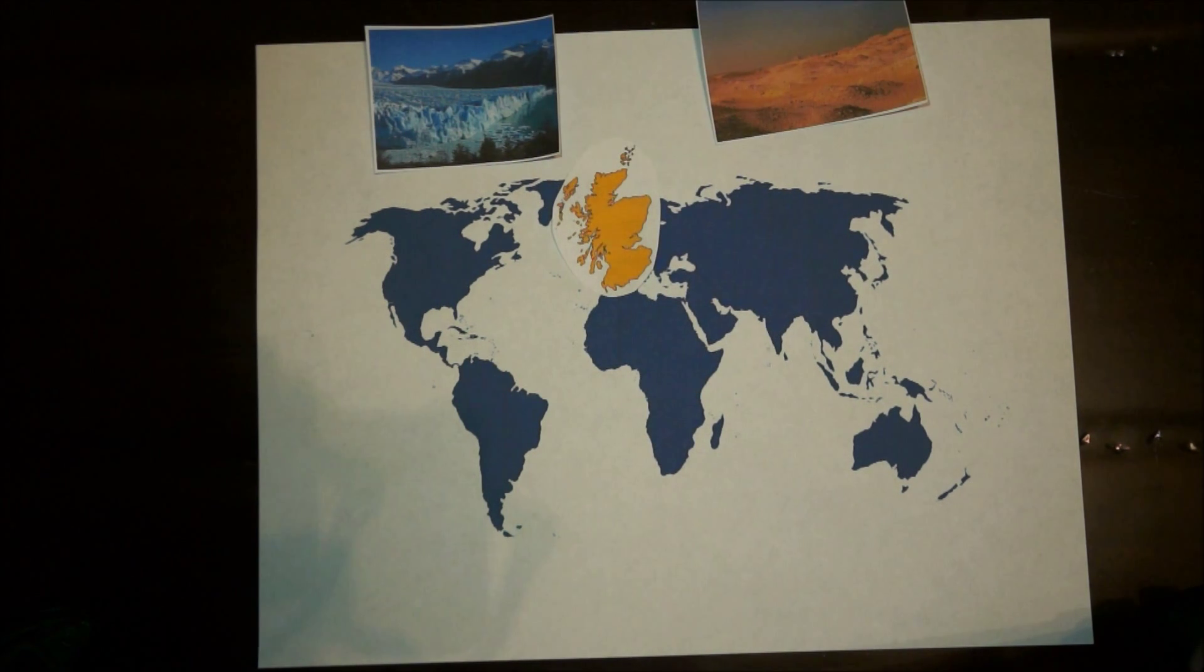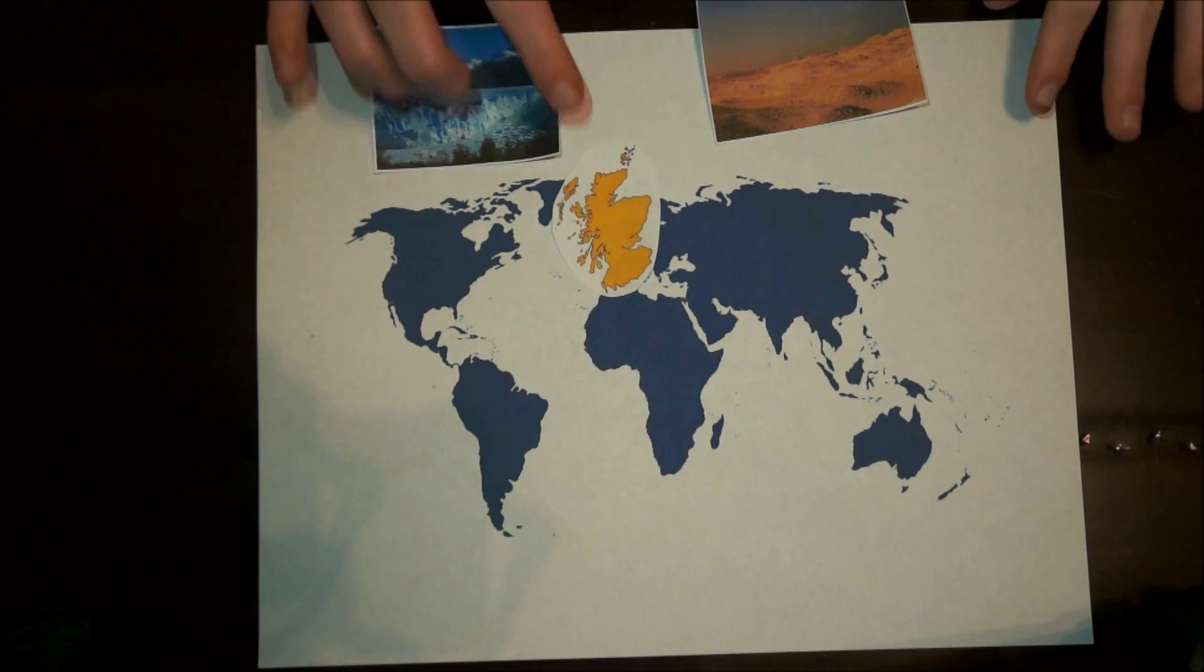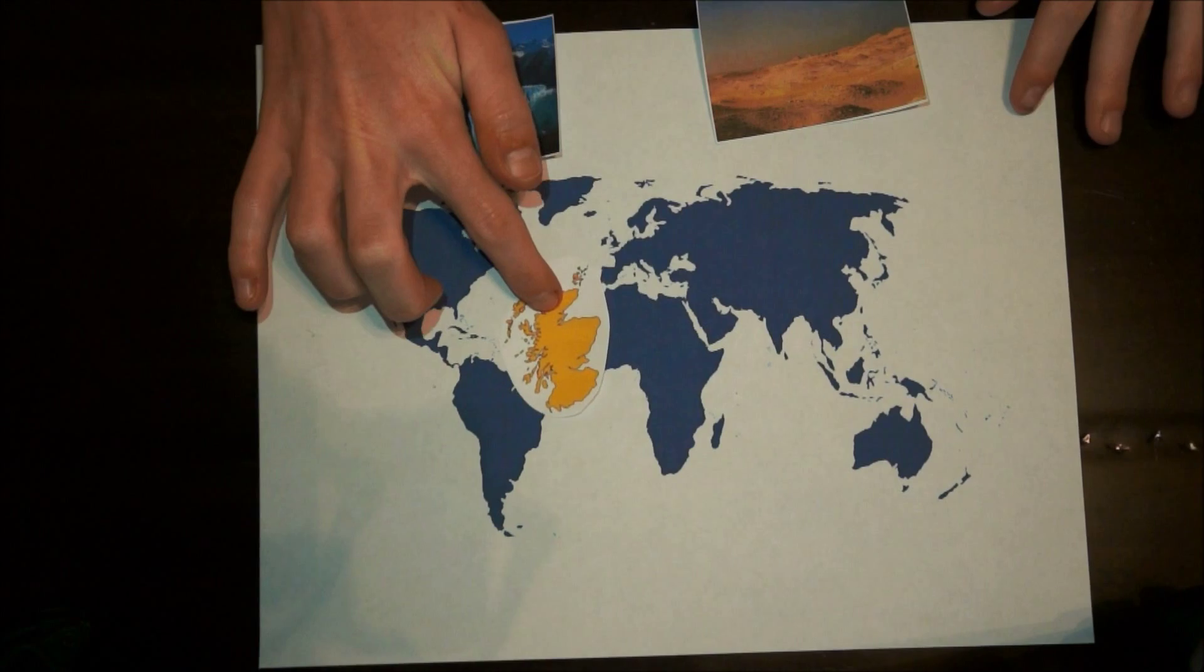The hot climate produced rocks off of the east coast that were once sand dunes when Scotland was located just above the equator.